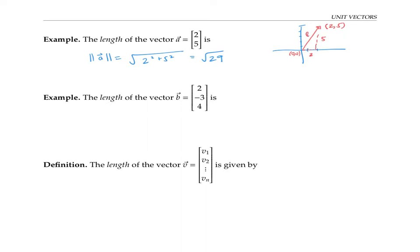If we want to find the length of this three dimensional vector, vector b with three entries, then we use the three dimensional version of the Pythagorean theorem. The length of b is going to be the square root of two squared plus negative three squared plus four squared. This works out coincidentally to also be the square root of 29.